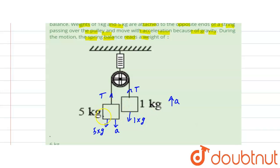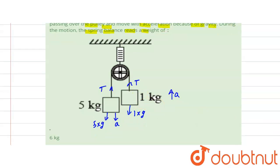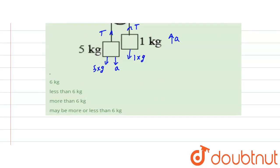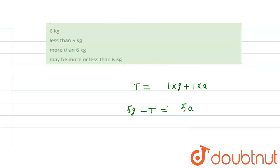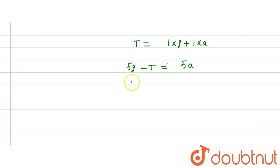For the 1 kg block, the equation is T equals 1 times g plus 1 times a, where a is the acceleration and mass times acceleration. For the second 5 kg block, 5g minus T equals 5a, mass times acceleration.